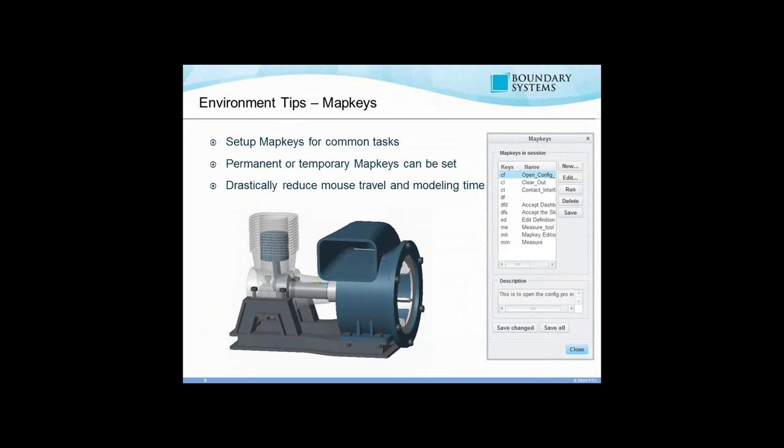Next up is setting up map keys, one of the wonderful hidden secrets of Creo. A map key is a keyboard key that you select and it then goes through specific menu picks or clicks that you've predefined ahead of time. You can set them to be permanent by saving them to config.pro so every time you launch Creo it loads those map key settings, or they can be temporary — for a particular session where you're doing a series of mouse-click intensive tasks. This drastically reduces your mouse travel time and modeling time, because you can just press a button and have Creo respond based on what you've predefined.